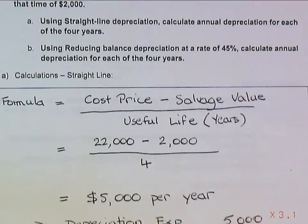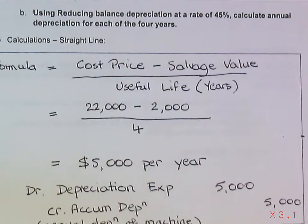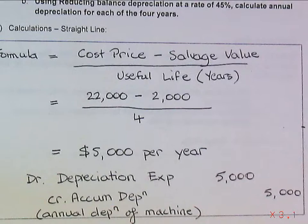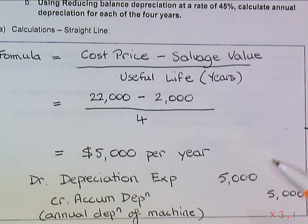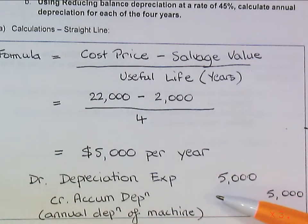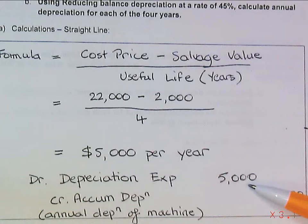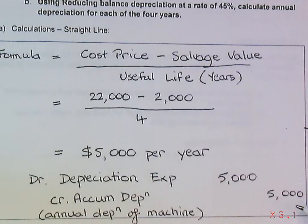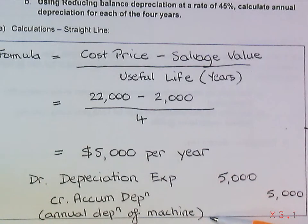The general journal entry we would make to achieve that — for each year we'll debit depreciation expense $5,000 and credit accumulated depreciation $5,000. Our narration would be something like 'annual depreciation of machine.'